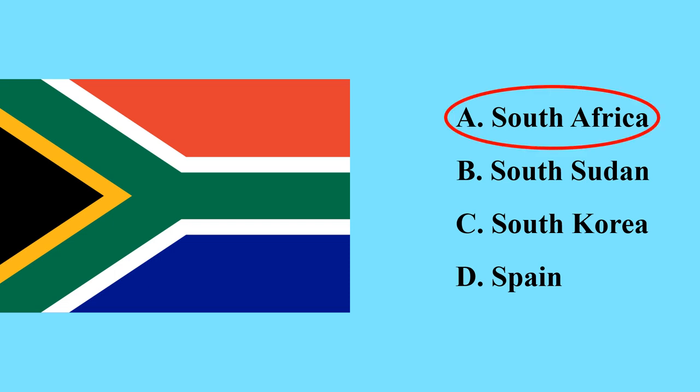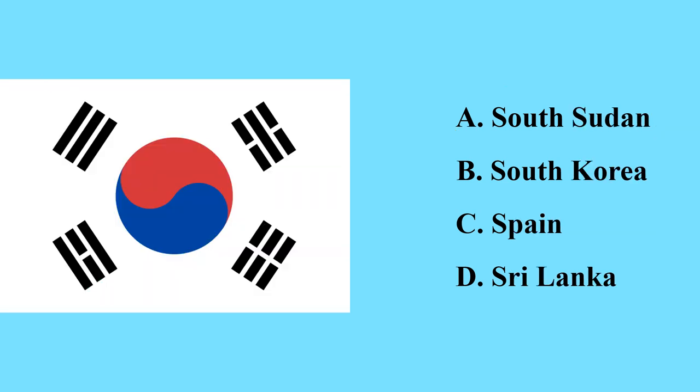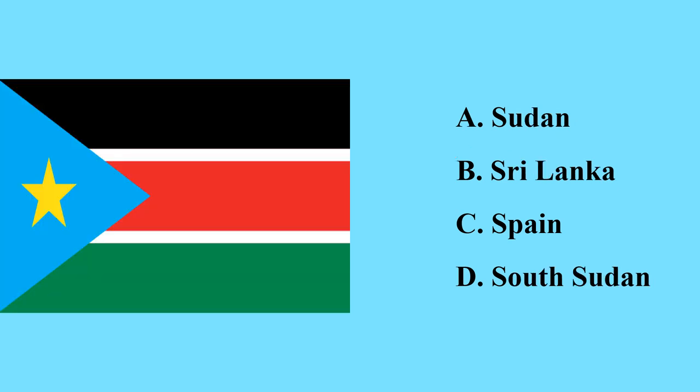This is the flag of South Africa — South Africa is a country with multiple capital cities. This is the flag of the Republic of South Korea in Far East Asia; its capital city is Seoul. This flag belongs to South Sudan — a newly recognized country that was part of Sudan; its capital city is Juba.